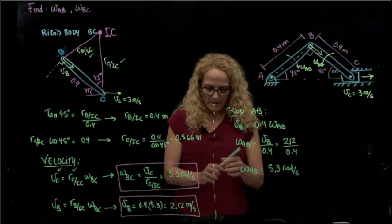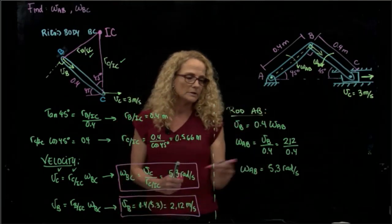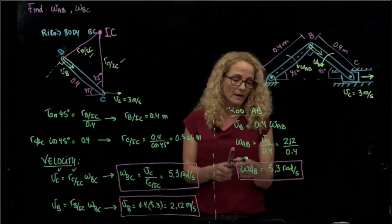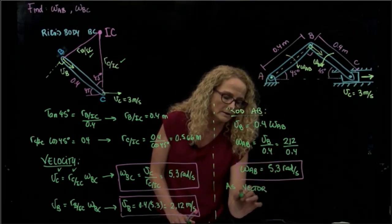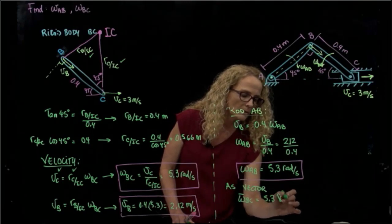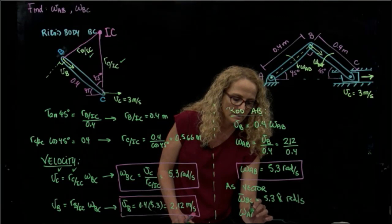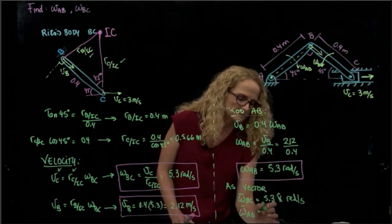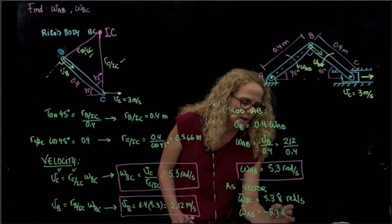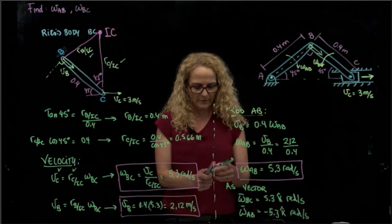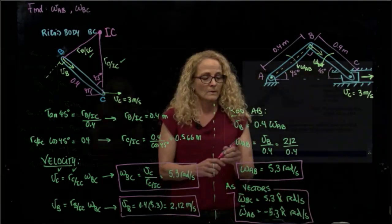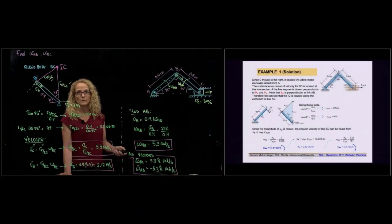So actually, those two bars have exactly the same angular velocity magnitude, but in opposite directions. As vectors, the angular velocity of BC is positive 5.3 k radians per second, and the angular velocity of AB is negative 5.3 k radians per second. If you want to take a look at that solution also in the PowerPoint presentation, here it is.